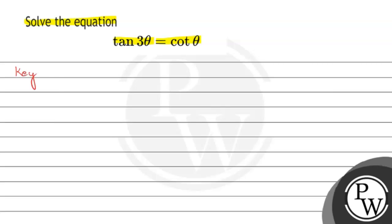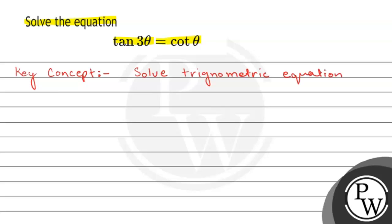The key concept is that we have to solve a trigonometric equation and find the value of θ. In this question, one trigonometric identity will be used: tan(π/2 − θ) is equal to cot θ. We will use this identity in this question.